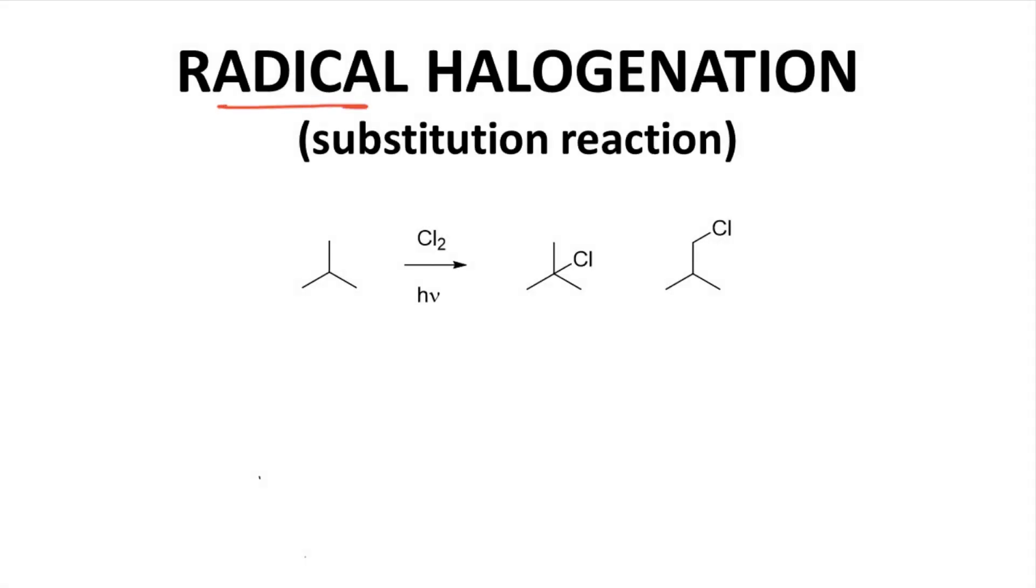Let's begin with the radical halogenation reaction. This is a substitution reaction in which a hydrogen is replaced with a halogen, a chlorine in this reaction. The reaction goes through a radical intermediate. I've drawn two isomeric products. These are regioisomers.